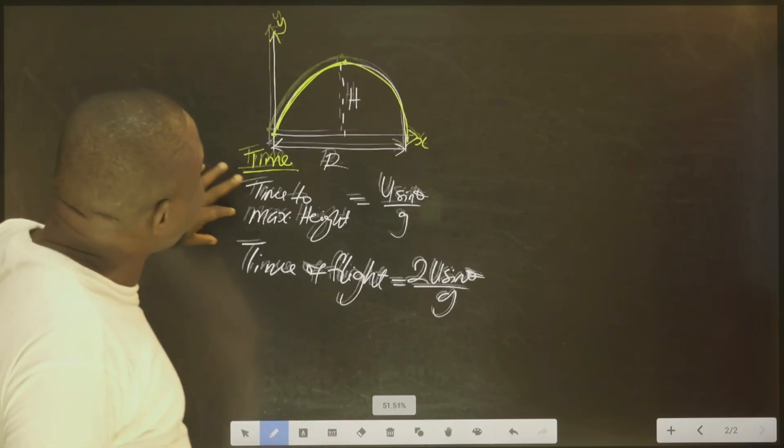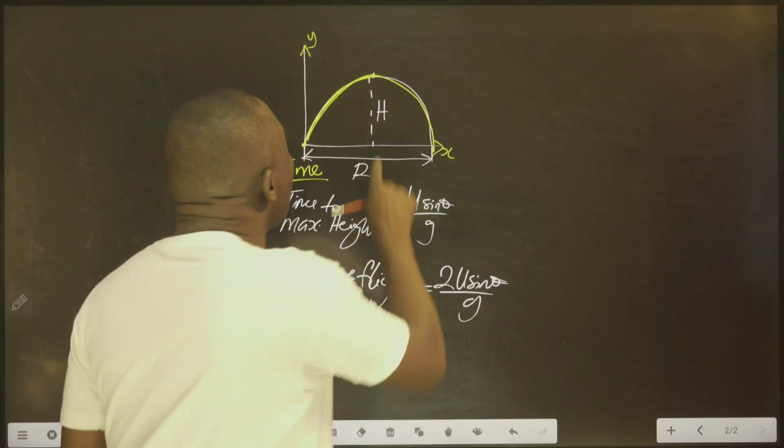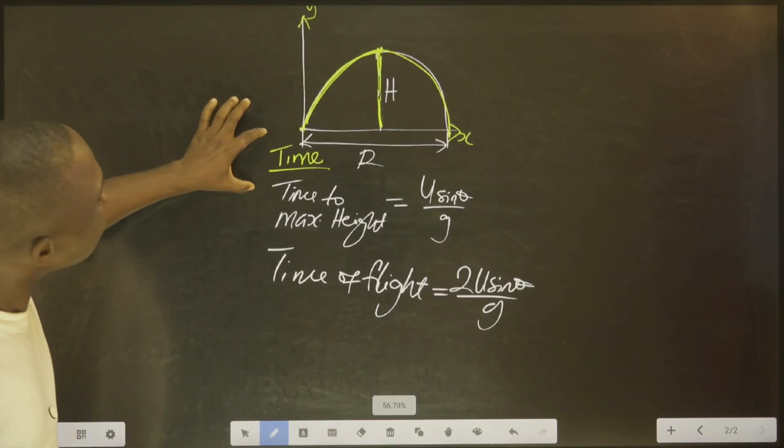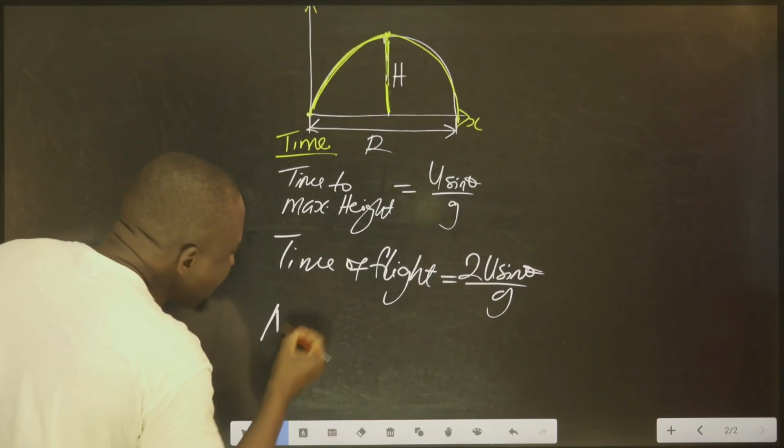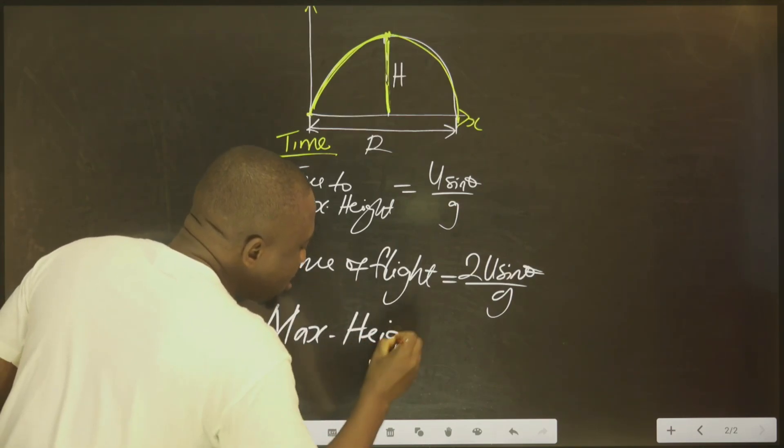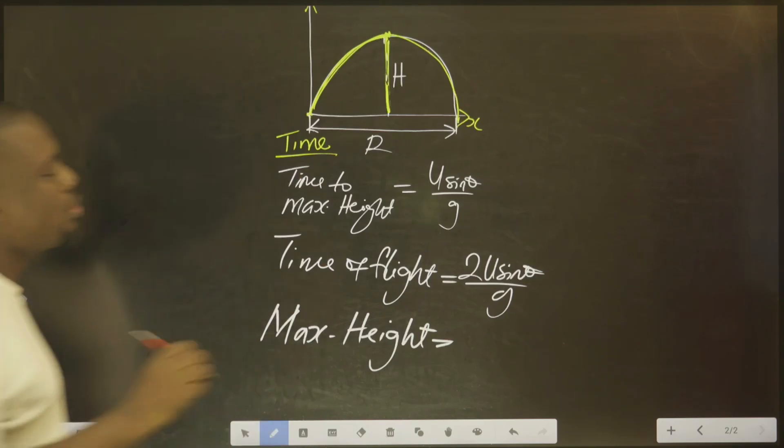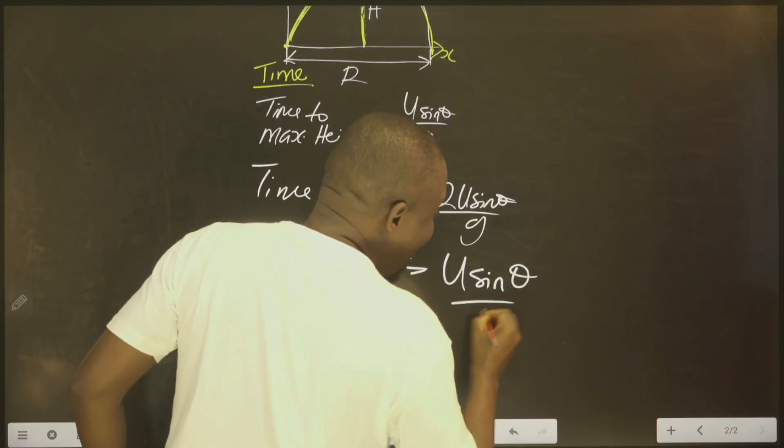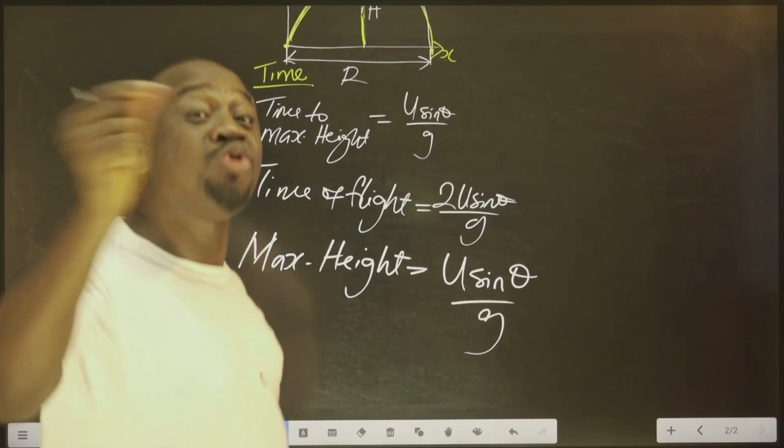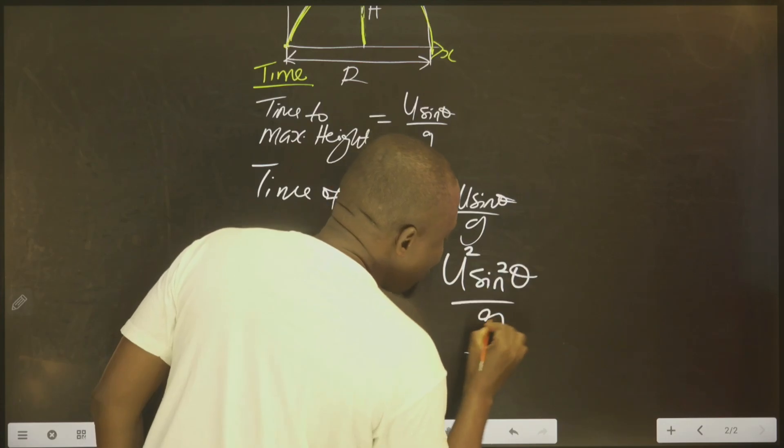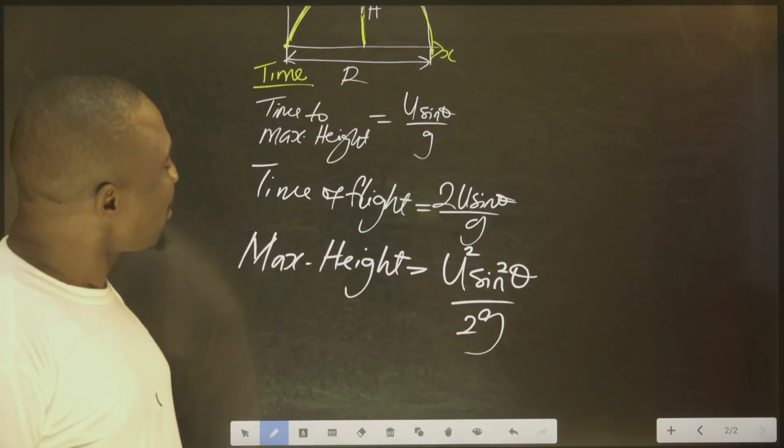You get the point now. Once you are through with the time, the next thing is to look for this maximum height itself. How do you calculate the maximum height? Maximum height is equal to, take this formula, U sine theta squared over G. Now you put two on top here, you put two here.